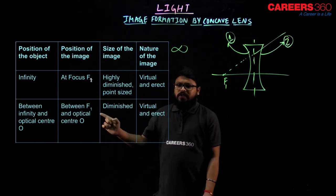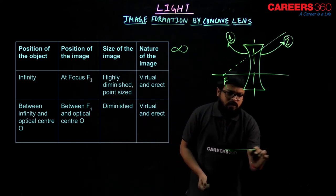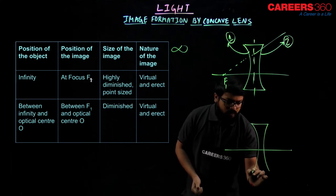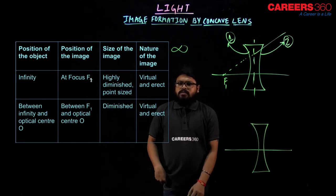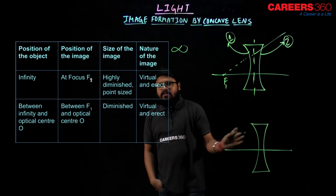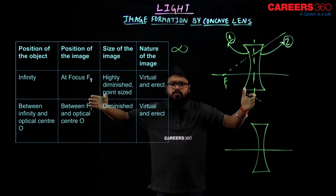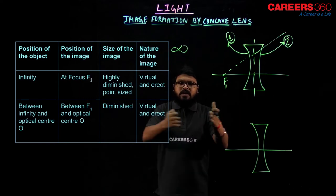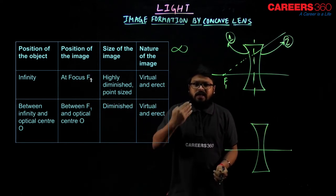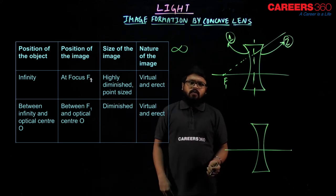Next, the object is placed between infinity and the optical center. If the object is placed anywhere between infinity and optical center O — excluding these two endpoints — the object produces an image with the help of the concave lens between F1 and O.